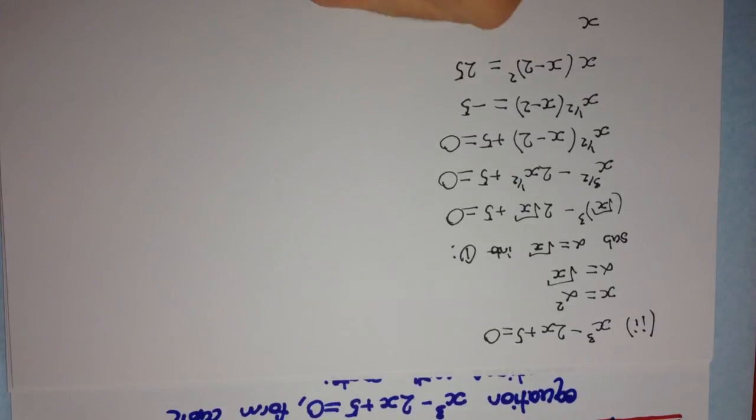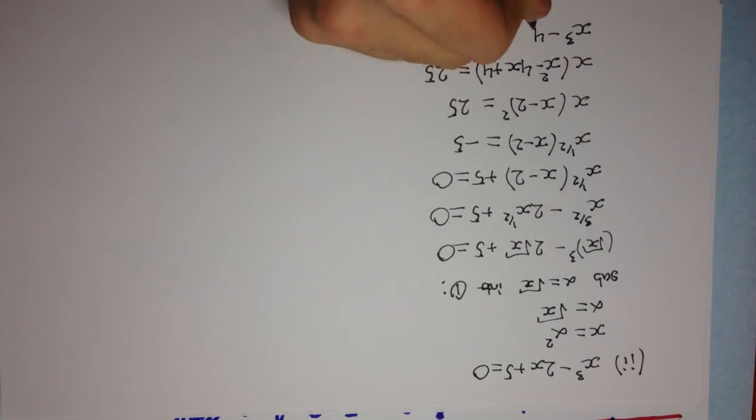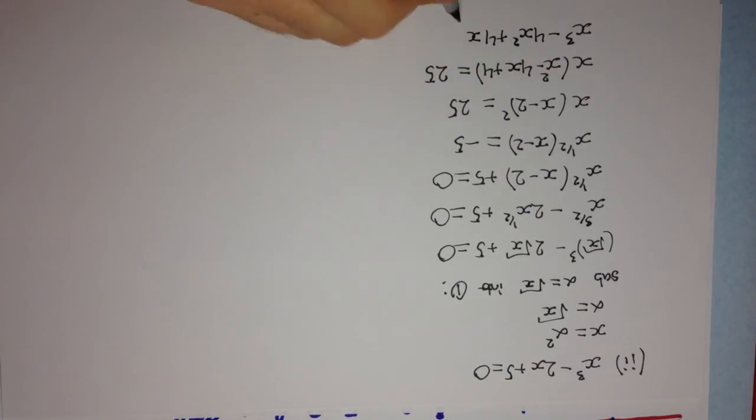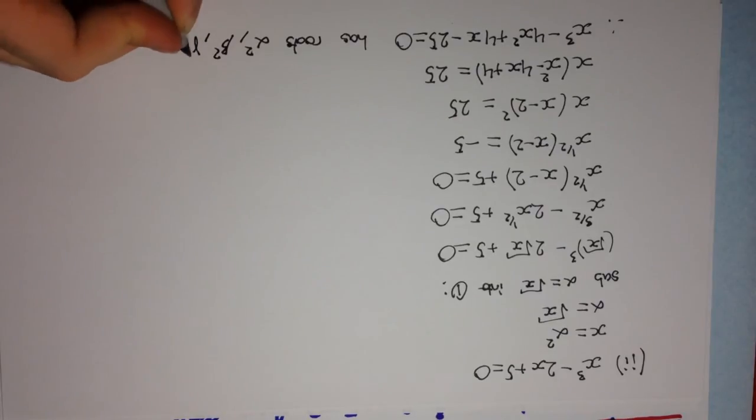Now, we can expand this out. x into x squared minus 4x plus 4 equals 25. And then we get x cubed minus 4x squared plus 4x, and we take 25 over to this side, we get minus 25 is equal to 0. So, therefore, this has roots alpha squared, beta squared, gamma squared.